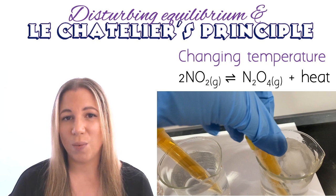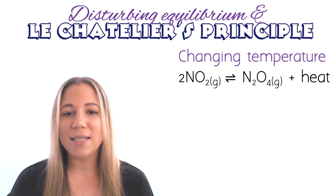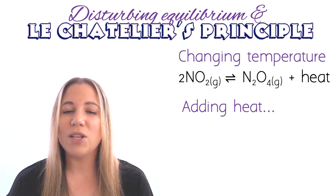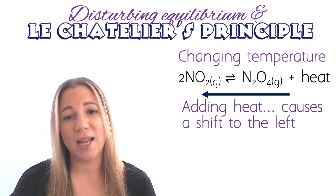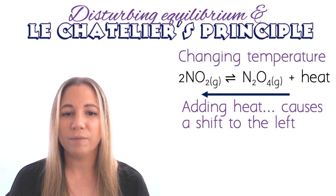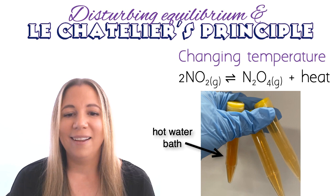If we increase the temperature by adding heat, the equilibrium is going to shift to counteract the addition of heat — so it should shift to the left. Therefore, we expect more nitrogen dioxide to be created, and since this is the brown gas, we expect the colour to get darker. The increase in temperature did cause the production of more nitrogen dioxide by shifting to the left.